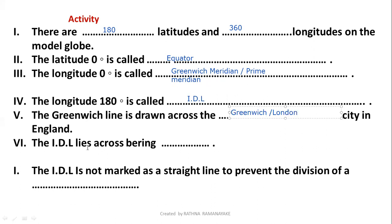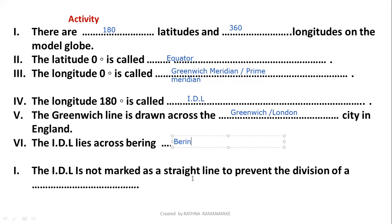The International Date Line lies across the Bering Strait. The IDL is not marked as a straight line in order to prevent the division of a country.